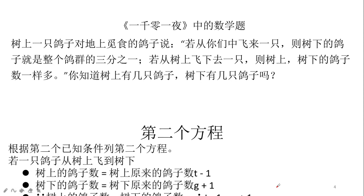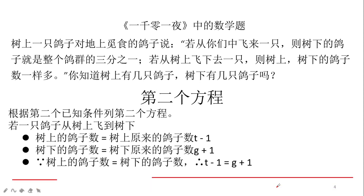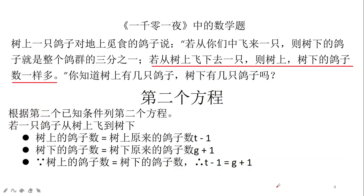再来看第二个方程，我们根据题目的第二个已知条件来列第二个方程。它说如果从树上有一只鸽子飞到了地上，那么树上的鸽子数量和地面上的鸽子数量是一样多的。就是有一只鸽子从树上飞到地上之后，树上和地上的鸽子数量就是一样多的。